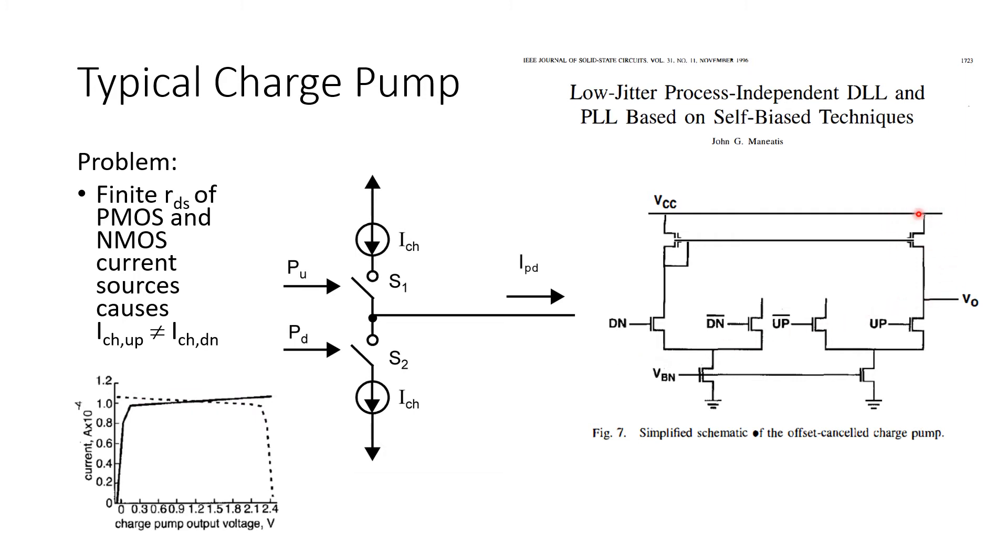But when active, this NMOS current source will source more current. Whereas when VO is low, this pull-down path will sink less current and the pull-up path will source more current. So you get a plot like this one where we plot output current for the pull-up and pull-down paths as a function of the output voltage.